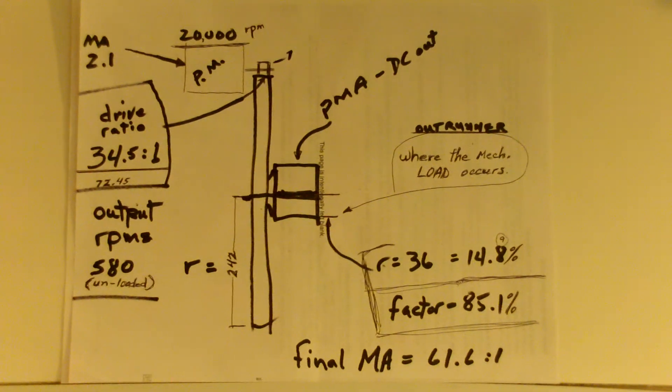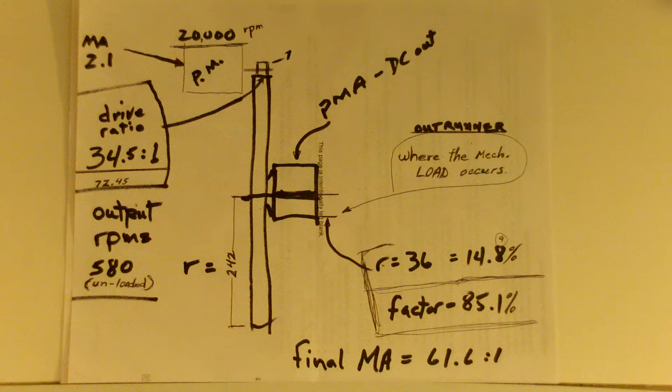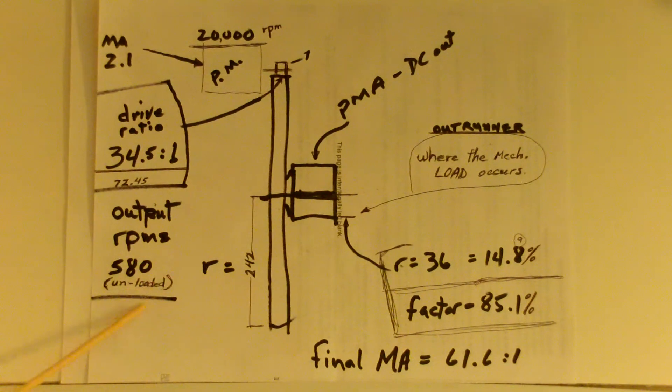We end up with the final drive of 61.6 to 1 of the little motor turning the big wheel one time. And it's done that in a very low loss, via a very low loss mechanism. Not close ratio. Close ratio mechanisms are compact, and they are high loss. And you don't want to use a high loss thing here. These are the numbers. And I end up with an unloaded rotation rate at the PMA of 580 RPM.